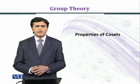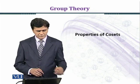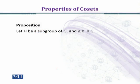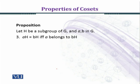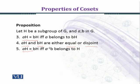In this module, we shall establish some more properties of cosets. Let H be a subgroup of G and A, B belong to G. First: AH equals BH if and only if A belongs to BH. Second: AH and BH are either equal or disjoint. Third: AH equals BH if and only if A inverse B belongs to H.